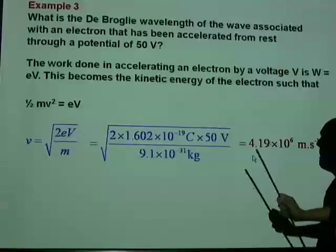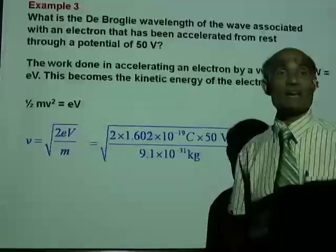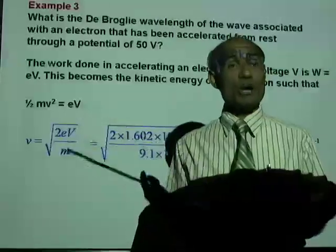Now, we know the velocity. We know the mass of the electron. And therefore, we can now calculate its de Broglie wavelength.